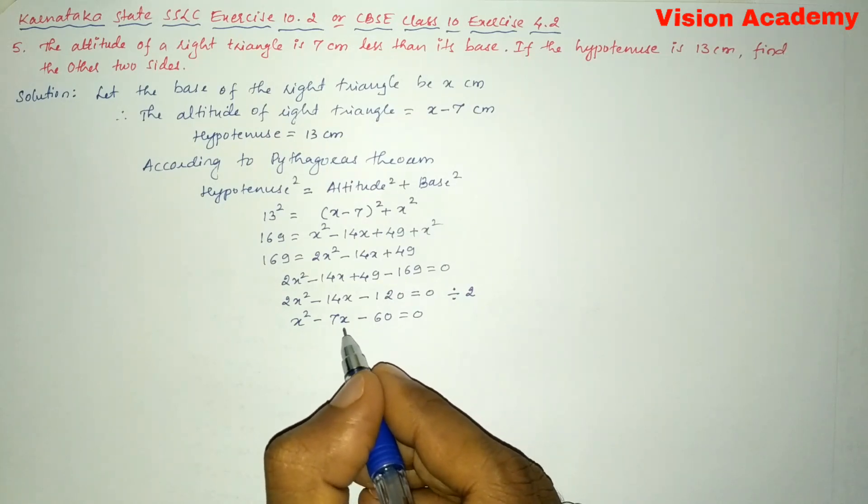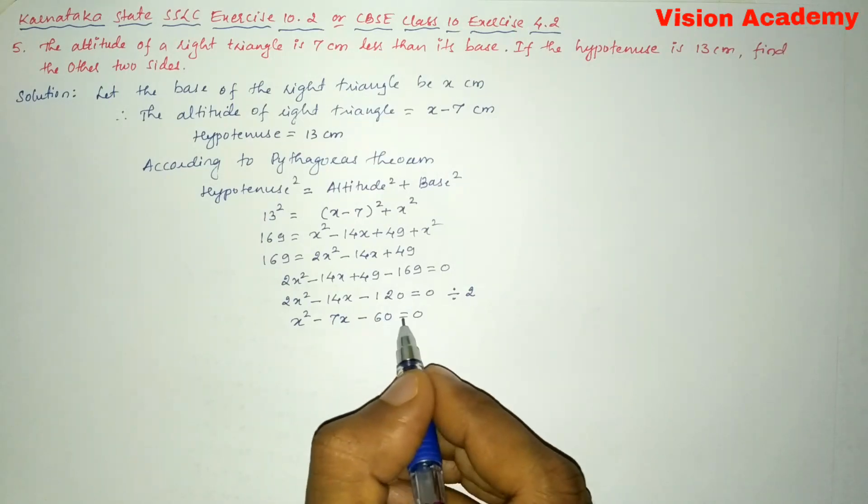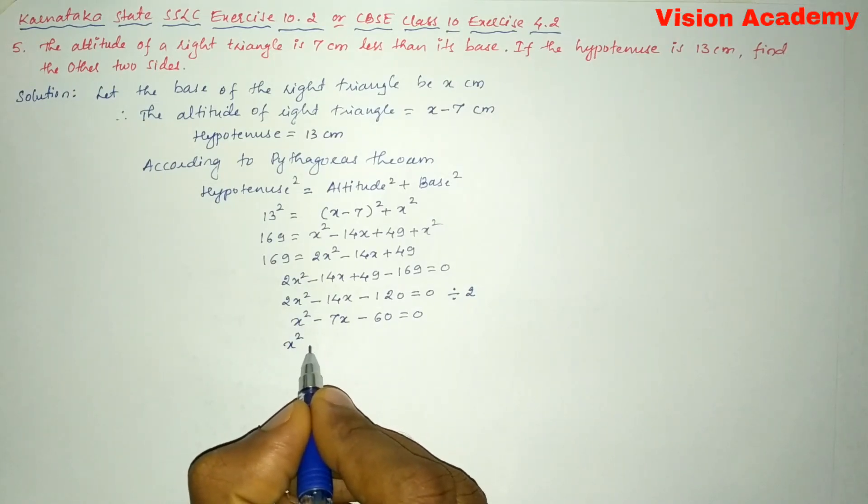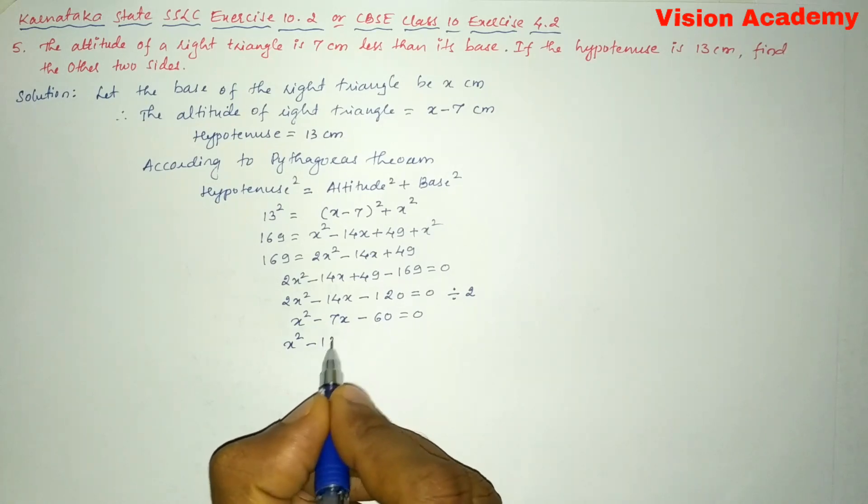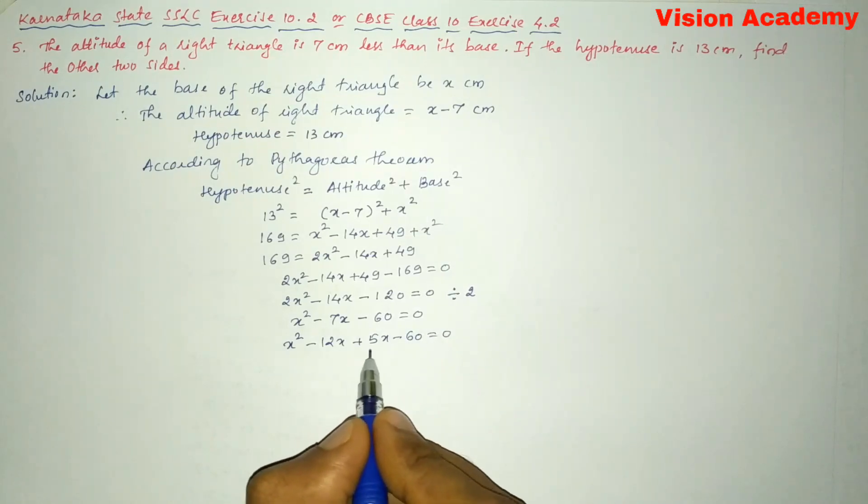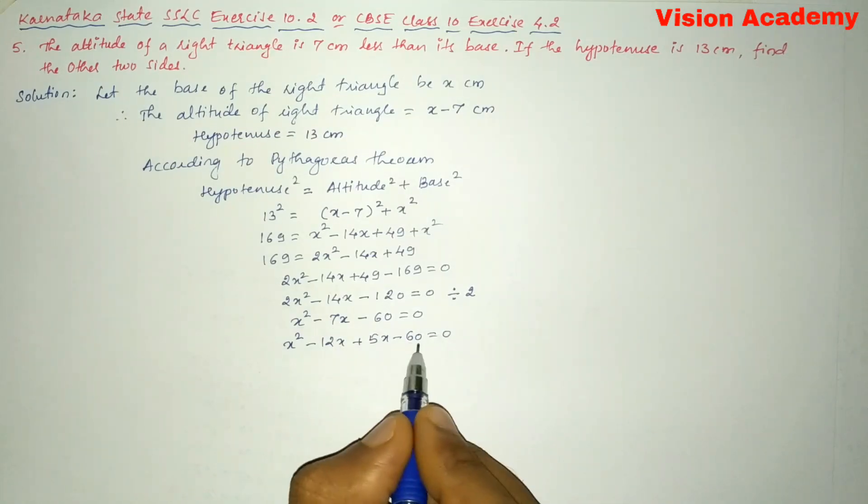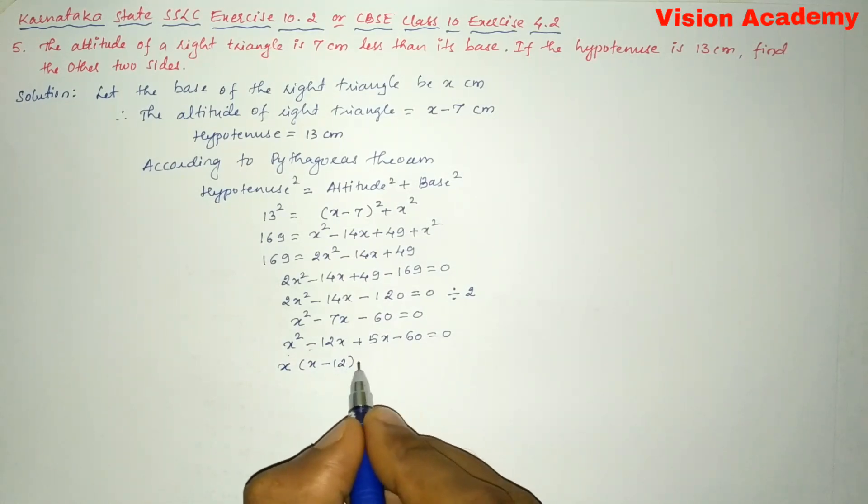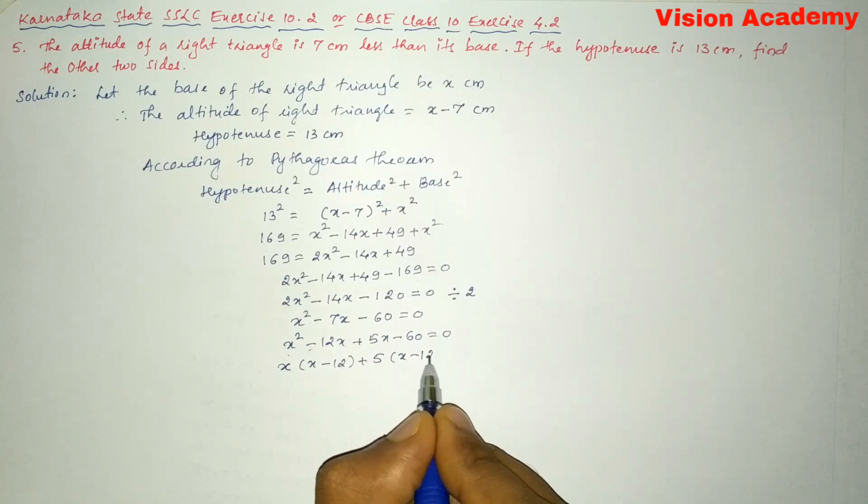Now we got the quadratic equation. We have to split this middle term in such a way that if I add two numbers I must get minus 7, if I multiply the same two numbers I must get minus 60. So let us split, so here x square and then we can write this one as minus 12x plus 5x minus 60 is equal to 0. So here 5 minus 12 gives us minus 7, 12 times 5 is 60, so that is plus and minus gives us minus 60. So now let us consider these two terms, the common is x so x minus 12 inside of the bracket, plus here in these two terms 5 is common so 5 times x minus 12.